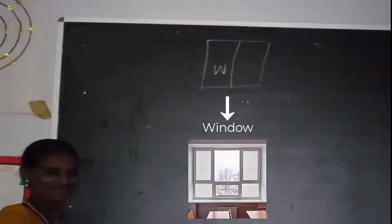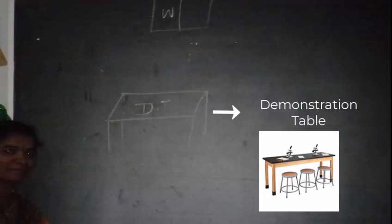This is how it happened in that class. A student teacher came and wrote W on the board which means window. Another student teacher came and wrote DT which means demonstration table.